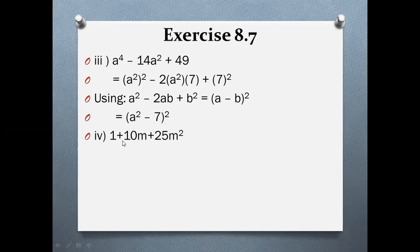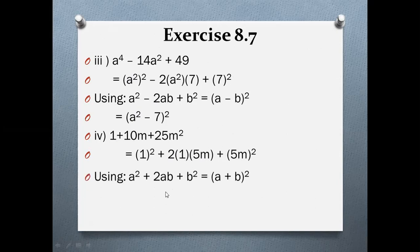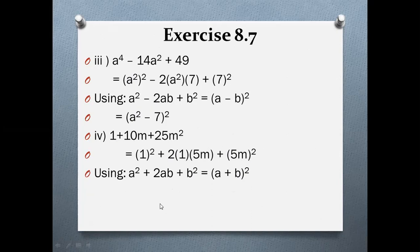Fourth part: 1 + 10m + 25m². 1 is a perfect square of 1, and 25 is a perfect square of 5, giving 5m. The middle term 2 × 1 × 5m = 10m is confirmed. Using (a + b)² = a² + 2ab + b², with a = 1 and b = 5m, the answer is (1 + 5m)².